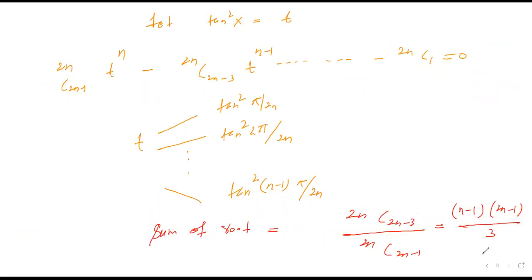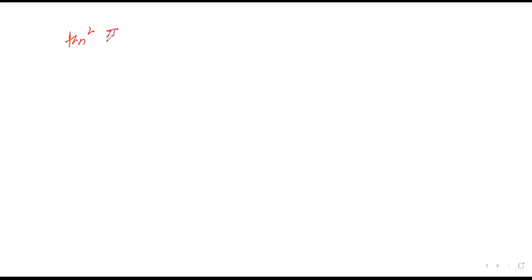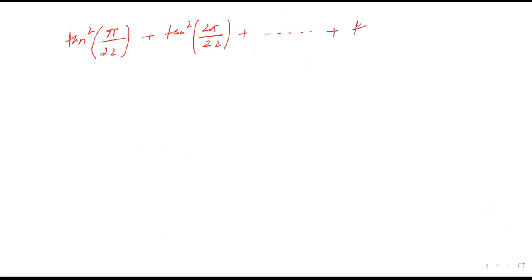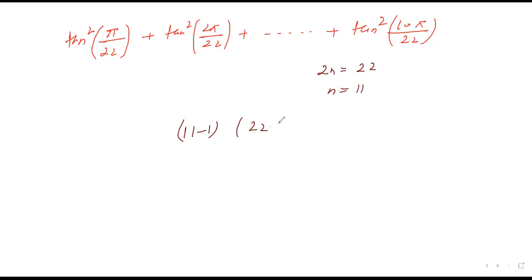इस पर एक और सवाल मैं बता देता हूं। जैसे मेरे पास question है: tan²(π/22) + tan²(2π/22) + ... + tan²(10π/22)। तो मैंने पिछली बार बताया था — नीचे 2N का format आएगा, 2N में 22 रखेंगे तो n = 11। आप n−1 तक चलेंगे यानि 10π/22 तक। अब यह summation किसके बराबर होगा — n पहले निकालेंगे, 2N = 22 है, n = 11। n−1 = 10, 2N−1 = 21, divided by 3 — यानि 10 × 21 / 3 = 70।